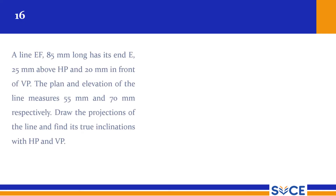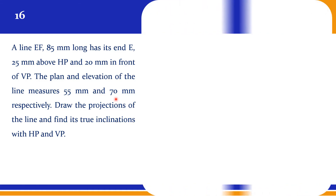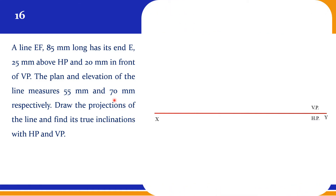In the 16th question, a line EF 85mm long has its end E, 25mm above HP and 20mm in front of VP. The plan and elevation of the line measure 55mm and 70mm respectively. Draw the projections of the line and find its true inclinations with HP and VP — so we need to find theta and phi. The true length is given along with top view 55mm and front view 70mm.